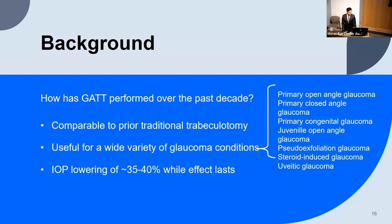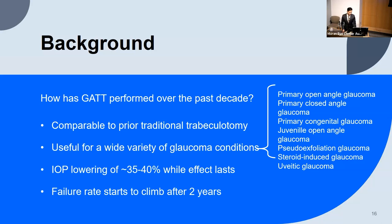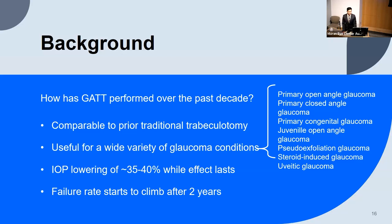Studies show an IOP lowering of about 35 to 40 percent while the effects last. The question is: how long does the GAT last? We've had many studies going up to just a two-year endpoint — that's why our project was initiated, to see if we can get data further than two years. There was a recent study published earlier this year with four-year data, and the failure rate really starts to climb after those two years.